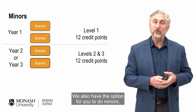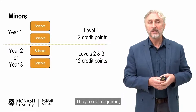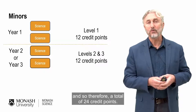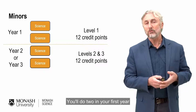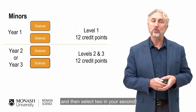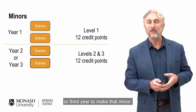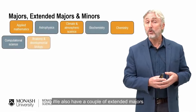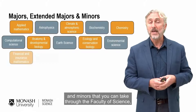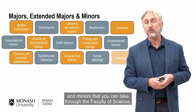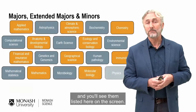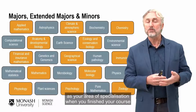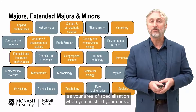We also have the option for minors — they're not required. A minor is four units, totalling 24 credit points. You do two in your first year and then select two in your second or third year to complete the minor. We have a very large number of majors, as well as a couple of extended majors and minors available through the Faculty of Science, listed on the screen. You can think of the major as your area of specialisation when you've finished your course.